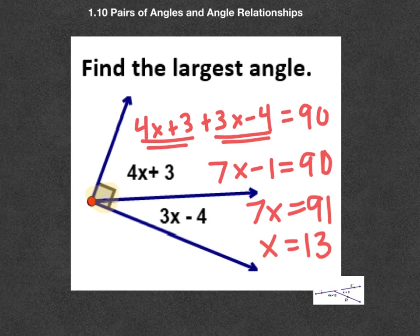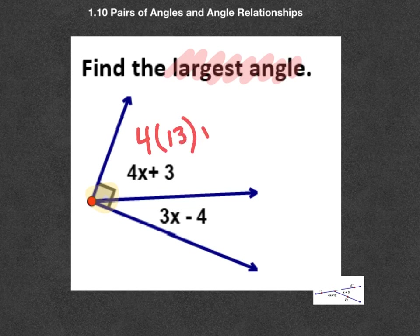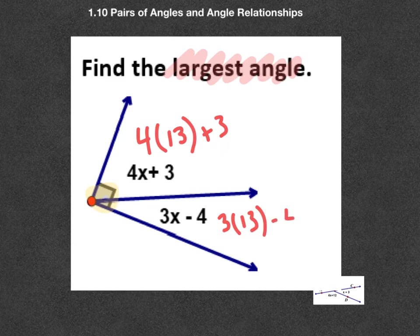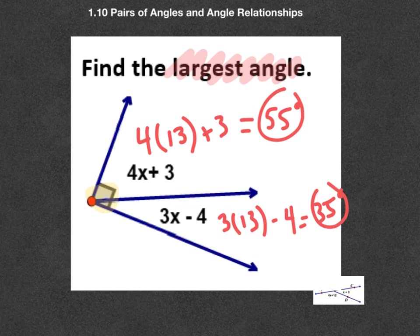Now, I do want you to notice something here. And this happens. So don't get caught up with this. What's the largest angle? So what you actually are going to do now with your 13 is plug it back in. So this guy is 4 times 13 plus 3. This guy is 3 times 13 minus 4. And don't let the picture distort that. But you better check it out. This becomes 55 degrees, and this becomes 35 degrees. So the answer is right here, friends. Be careful to make sure you answer the question.